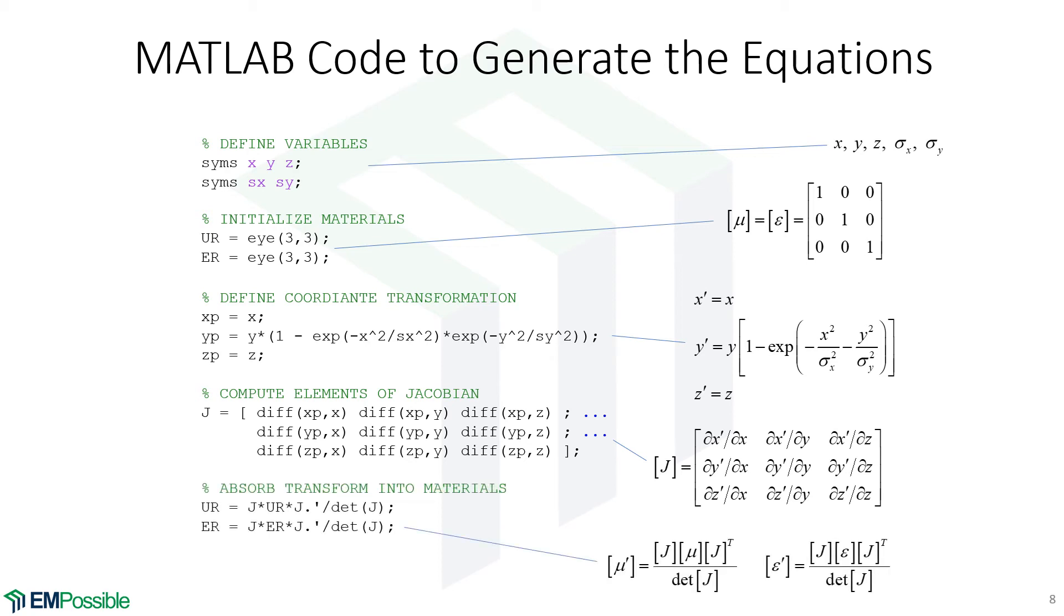After this, we transform our materials. And we're simply just typing in these equations for the transform. Remember, we had the identity matrix at first. So really, we don't need those here. However, if we wanted to go play with this and try something else, then we have to leave them here. So now we have mu and epsilon, where we move the math from a coordinate transform into mu and epsilon.